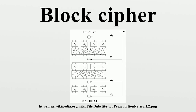Modes of Operation. A block cipher by itself allows encryption only of a single data block of the cipher's block length. For a variable-length message, the data must first be partitioned into separate cipher blocks. In the simplest case, known as the electronic codebook mode, a message is first split into separate blocks of the cipher's block size, and then each block is encrypted and decrypted independently. However, such a naive method is generally insecure because equal plaintext blocks will always generate equal ciphertext blocks.